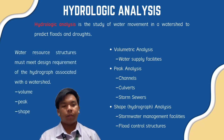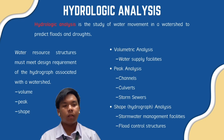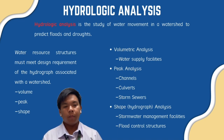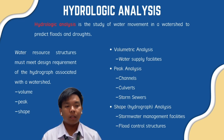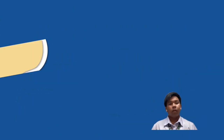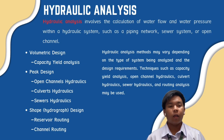After the design frequency is specified, we conduct hydrologic analysis — the study of water movement in a watershed to predict floods and droughts. The volume, peak, and shape of the water resource structures must meet the design requirement for the hydrograph associated with the watershed. In volumetric analysis we look at water supply facilities; in peak analysis we examine channels, culverts, and storm sewers; in shape or hydrograph analysis we look at stormwater management facilities and flood control structures.